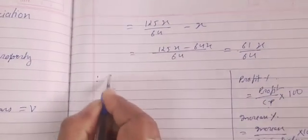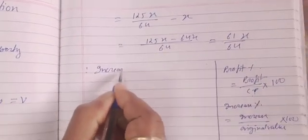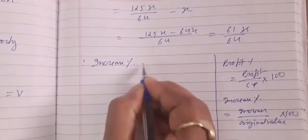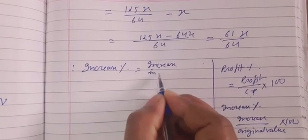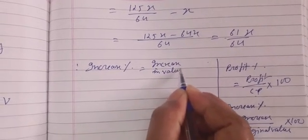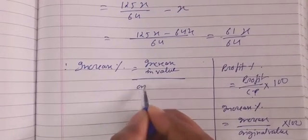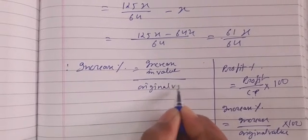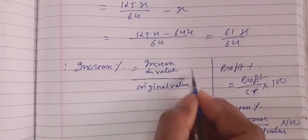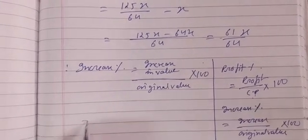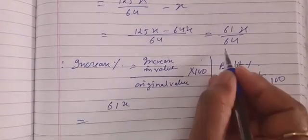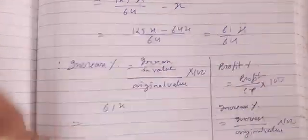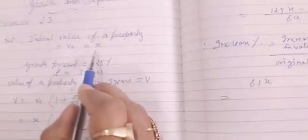Therefore increase percent is equal to what? Increase in value divided by original value times 100. So what is increase in value? This is increase in value - this much value increased, means earlier the value of that property was x.